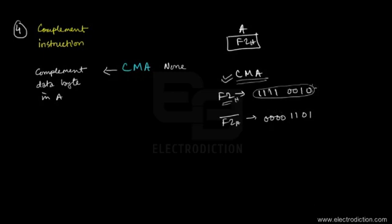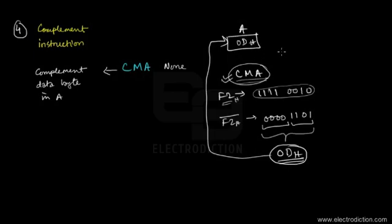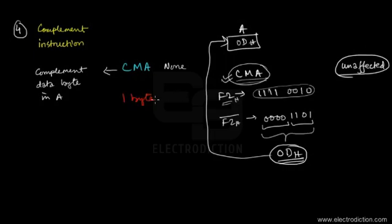The complement of F2H expressed in hex is 0DH. This result gets stored in the accumulator. Notably, CMA is the only logic operation in this set for which the flag bits remain unaffected.